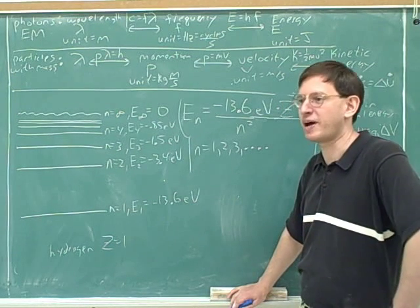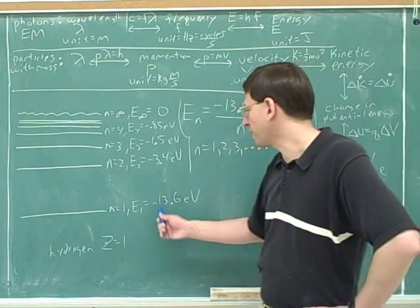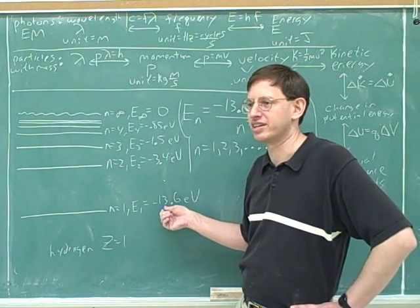Now, where do electrons want to be? Do they want to be close to the nucleus or far? Close. Because the nucleus is positive. Because the nucleus is positive, and they're negative. Electrons like being close to the nucleus. That is the reason why this is the most negative energy down here.